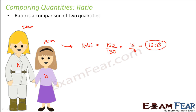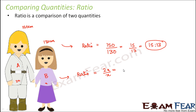Another way of expressing ratio: let's say that the height of A is twice the height of B. That means if height of B is x, then height of A will be 2x. In this case, the ratio of height of A to height of B would be 2x divided by x, which is 2 by 1, or 2 is to 1.